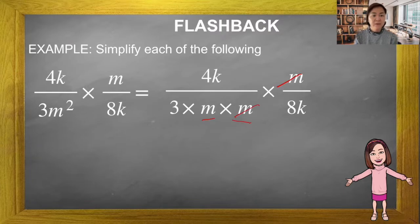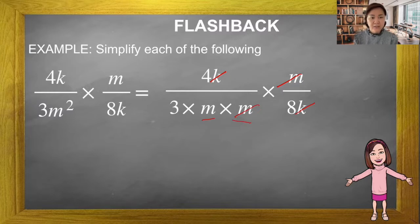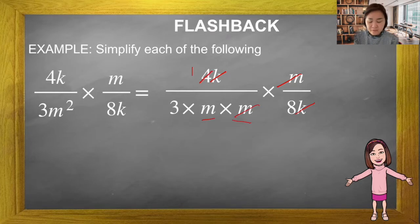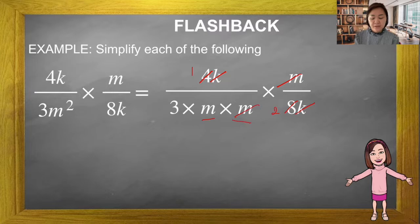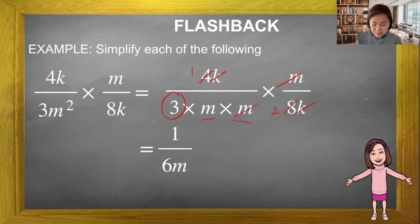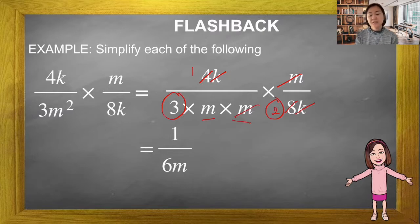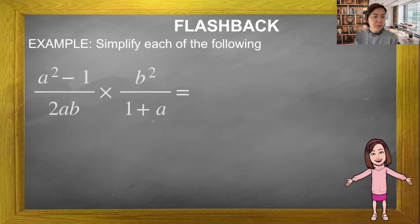Now we simplify. m and m: m divided by m equals 1. Then k and k — remember, one on top and one on the bottom, different levels. Then the common factor: 4 divided by 4 is 1, and 8 divided by 4 is 2. No more to simplify. Final answer is 1 over 6m, since 3 times 2 equals 6.